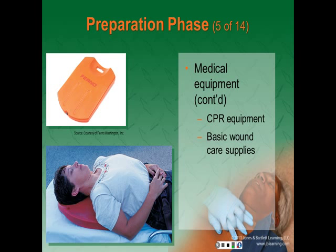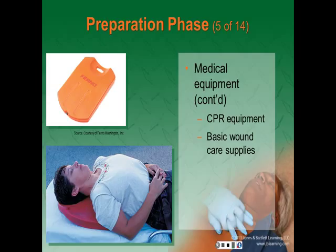CPR equipment: A CPR board provides a firm surface under the patient's torso and establishes an appropriate degree of head tilt. If unavailable, you can use a long or short backboard. A tightly rolled sheet or towel can raise the patient's shoulder 3 to 4 inches, but do not hyperextend the neck if you suspect spinal injury. Mechanical devices that deliver chest compressions and ventilations are also available but are very expensive.